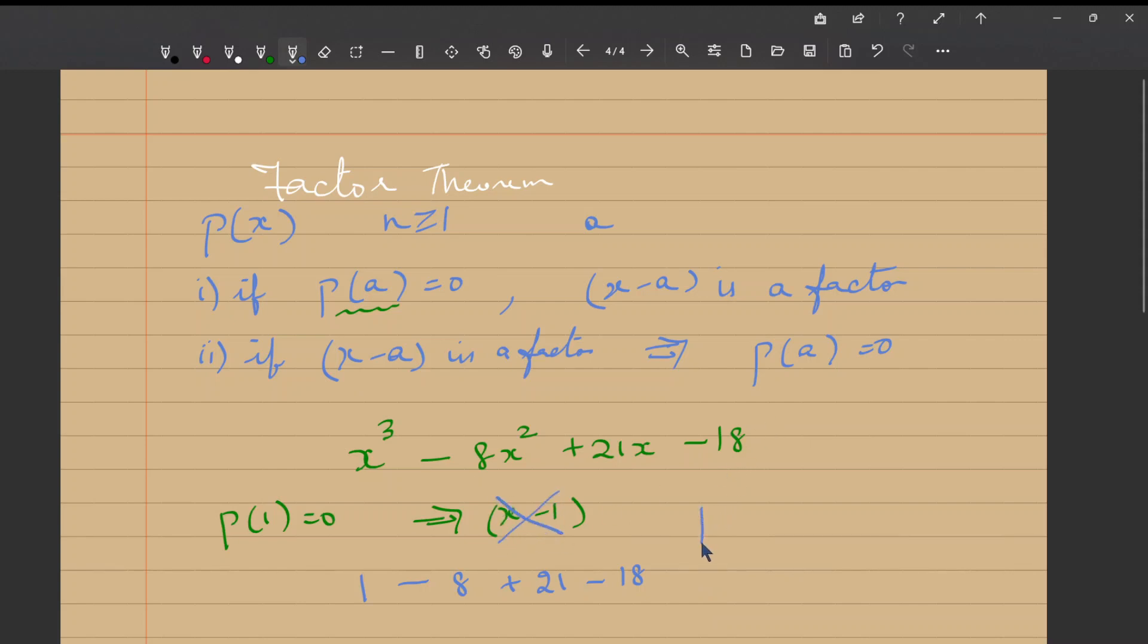So let me try P(-1). Let me see if it is equal to 0. -1³ is -1, and -1² is 1, so -8 -21 -18. I have such a lot of negative numbers here, so they are not definitely going to be equal to 0. So P(-1) is also not equal to 0. So x + 1 is not a factor.